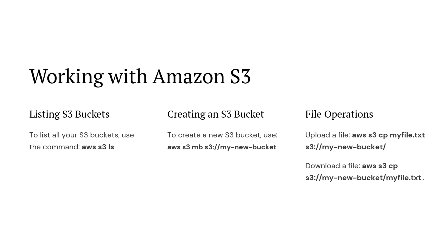Working with Amazon S3: to list all your S3 buckets, use the command 'aws s3 ls'. To create a new S3 bucket, use 'aws s3 mb' followed by the bucket name. To upload a file, use 'aws s3 cp' followed by the file name and the bucket name. To download a file, use 'aws s3 cp' followed by the bucket name and the file name.